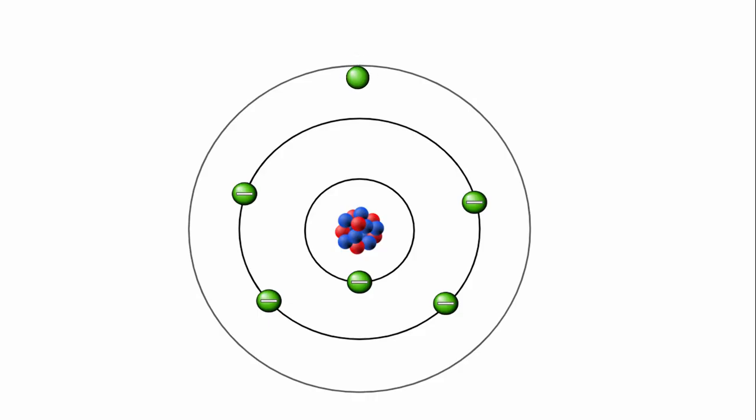This electron can fall back down to a lower energy level, and in turn releases energy in the form of a photon, which is a particle of light.